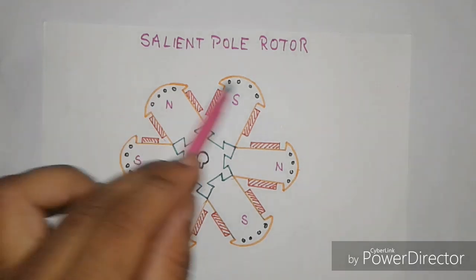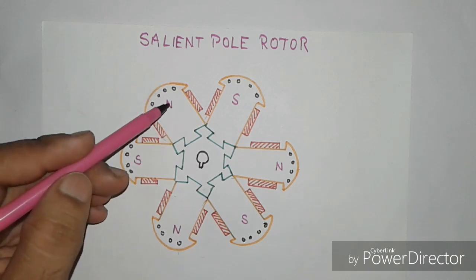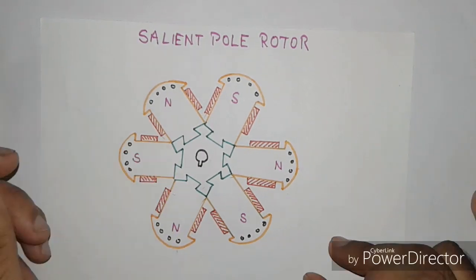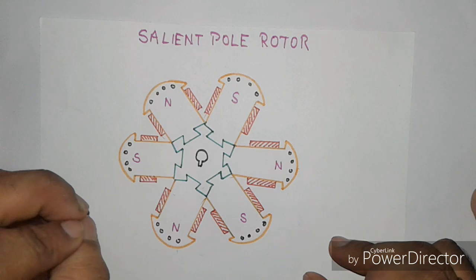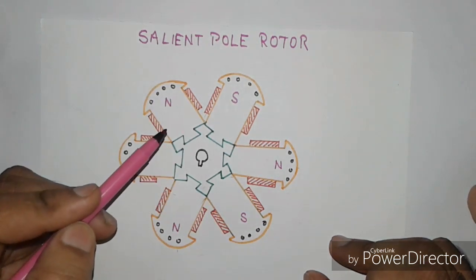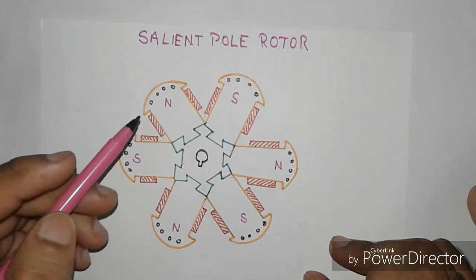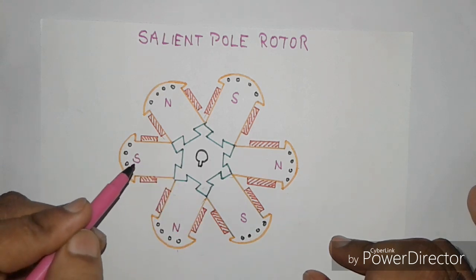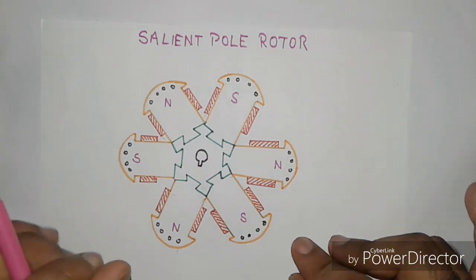These types of rotors are used for medium speed and low speed alternators. These rotors are projected out from the surface of the rotor core. These projected poles are made up of steel lamination to reduce eddy current losses. In these rotors, the poles are fitted by dovetail joints to a spider keyed to the shaft. The diameter of these rotors is larger and the length is small.